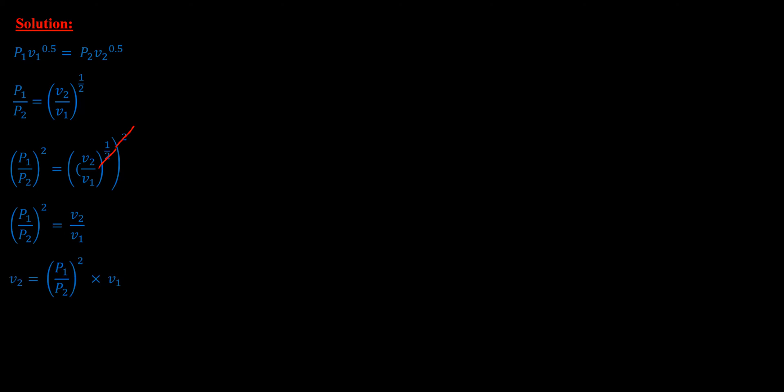For the specific volume V2, we need to find V1. We know that specific volume is volume over mass. For state one, we are given the volume as 1.5 and the quantity of the gas is 3 kilograms, so we will end up with 0.5 cubic meters per kilogram.